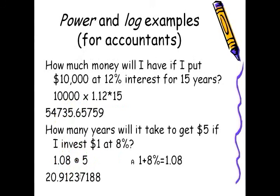Here's an example for accountants. How much money will I have if I put $10,000 at 12% interest for 15 years? Over $54,000. How many years will it take to get $5 if I invest $1 at 8%? It will take over 20 years.